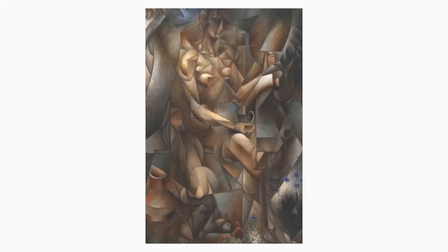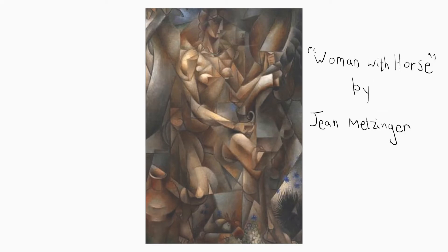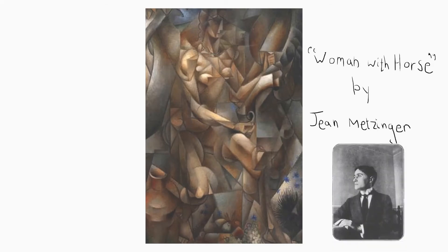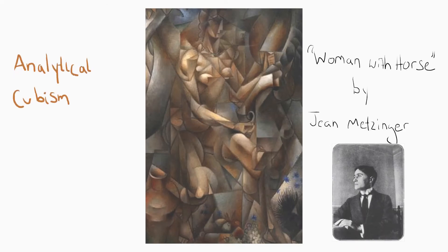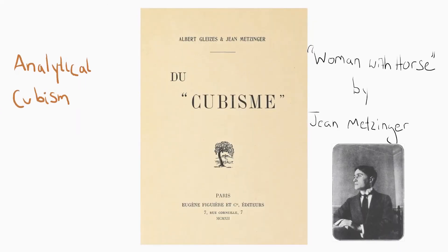Apart from being a renowned physicist, Bohr is also a fan of cubism. After moving into a new home in the early 1930s, Niels Bohr bought and displayed this painting in his house. Translated into English, this painting is titled Women with a Horse, a 1912 painting by the artist Jean Metzinger. As you can see by the geometrically abstract nature of the painting, many of Metzinger's works were involved in the early cubism movement. This painting is specifically tied to analytical cubism.